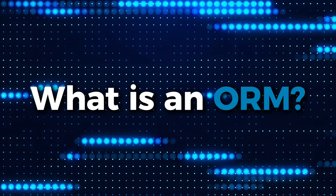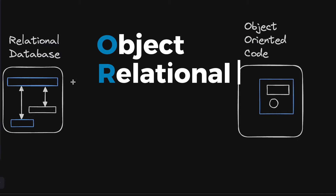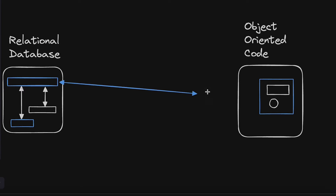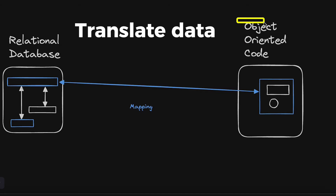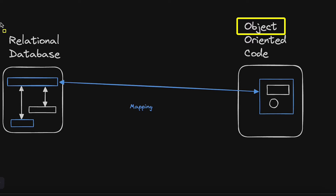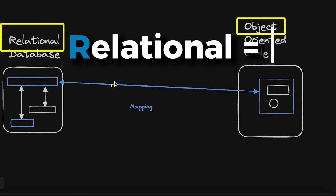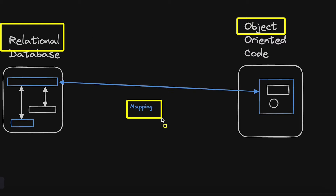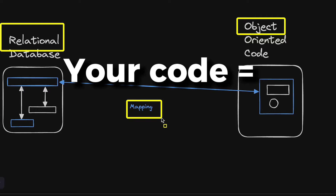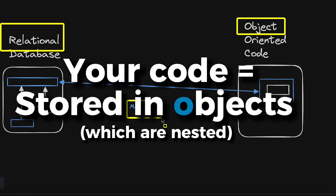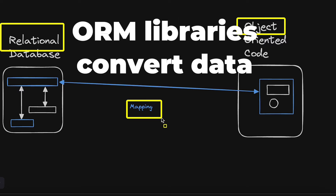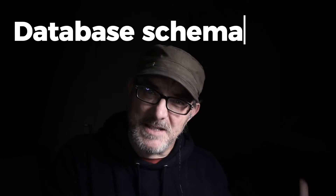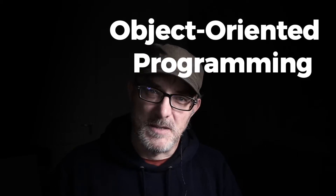Drizzle and Prisma are both ORMs, but what does that mean? ORM stands for Object Relational Mapping. In short, the name says it all. ORMs translate data between two structurally different formats — between relational databases where data is stored in rows, which are flat, and your code where, in general, data is stored in objects, which are nested. ORM libraries convert data one way and back between database schemas and object-oriented programming.